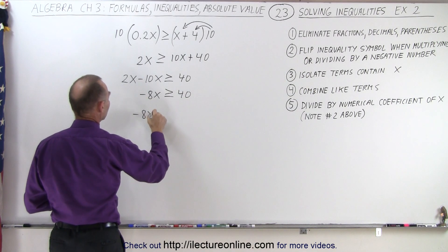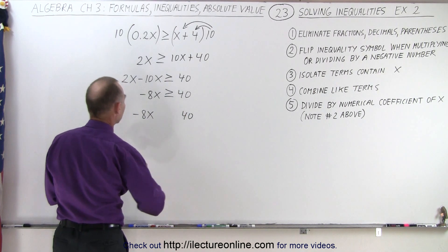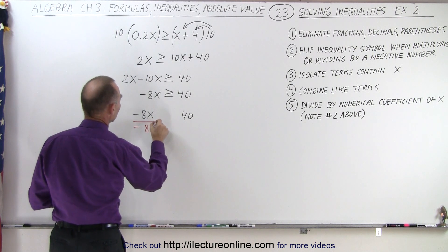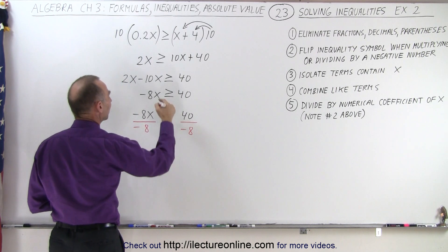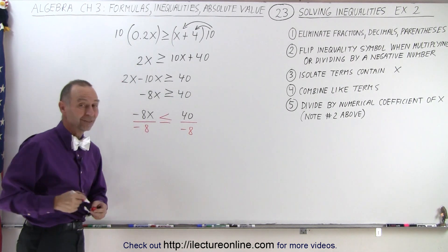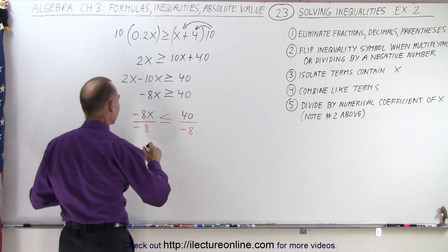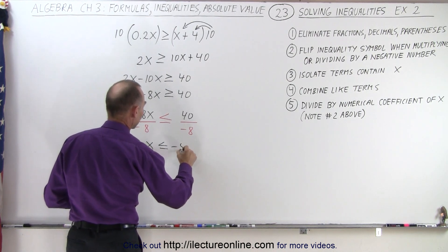We have a negative 8x, we have a 40. I'm going to divide the left side by negative 8. That means I'm going to divide the right side by negative 8, which means I have to flip the inequality symbol, and it's now going to be less than or equal to instead of greater than or equal to. The negative 8s cancel out. I end up with x less than or equal to negative 5.